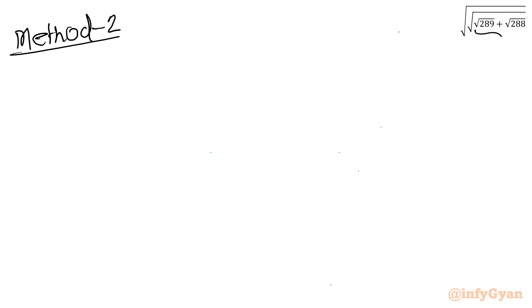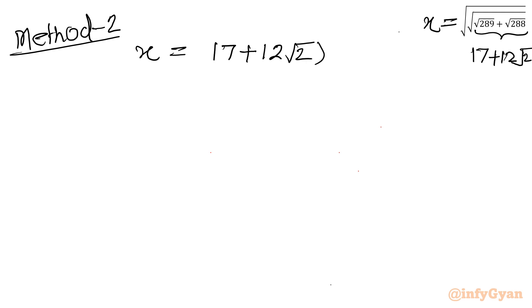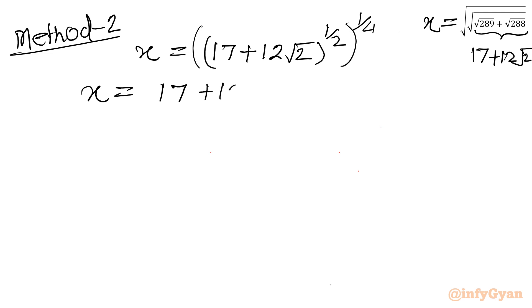Method number 2 or approach number 2. Here I will consider the radicand as 17 plus 12 root 2. So we can write x equal to (17 plus 12 root 2) to the power half. Again power is half. Using the exponent property a power b whole power c equals a power b times c, it will become (17 plus 12 root 2) to the power 1 by 2 times 1 by 2, which becomes 1 by 4.